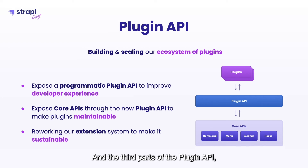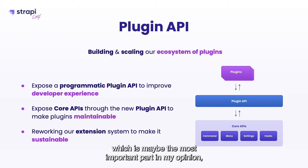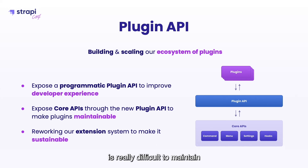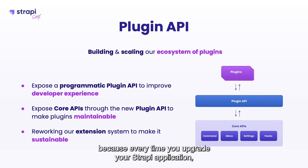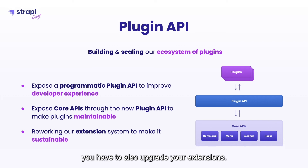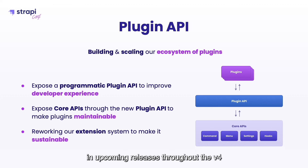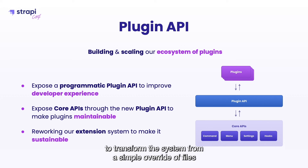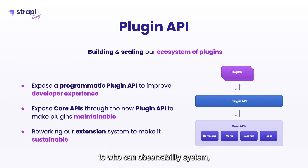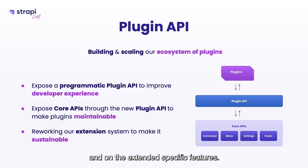The third part of the plugin API, which is maybe the most important in my opinion, is the way we currently do plugin extensions. It's really difficult to maintain because every time you upgrade your Strapi application you also have to upgrade your extensions. We will replace that throughout V4 — transforming the system from a simple file overwrite to a hook and observability system where you can plug your code where you want and only extend specific features. This will make your plugins a lot more stable and maintainable over the longer term.